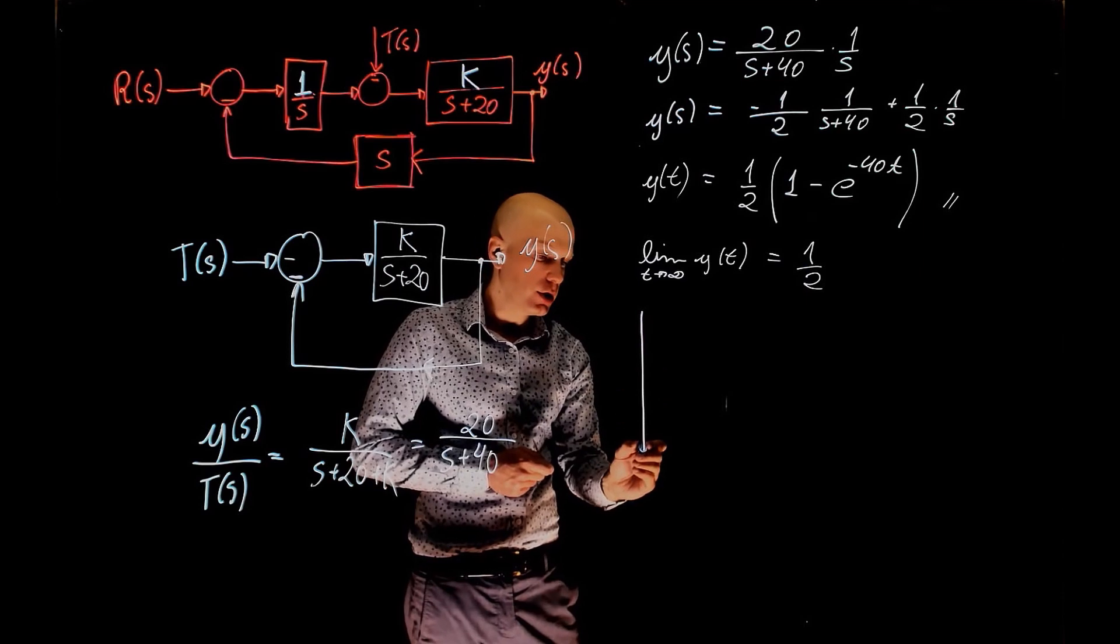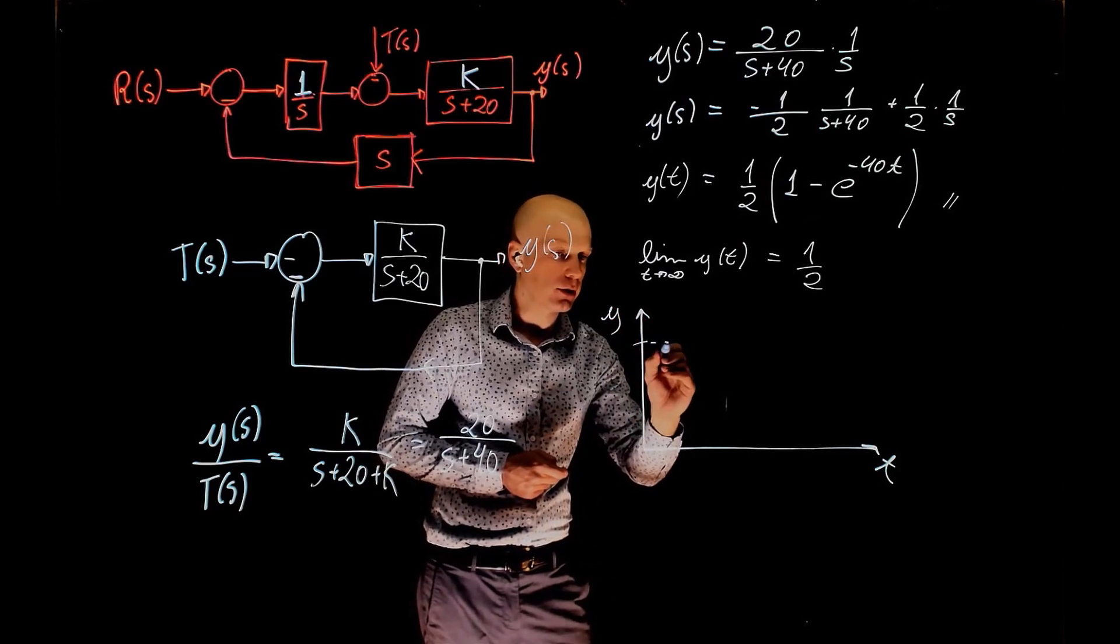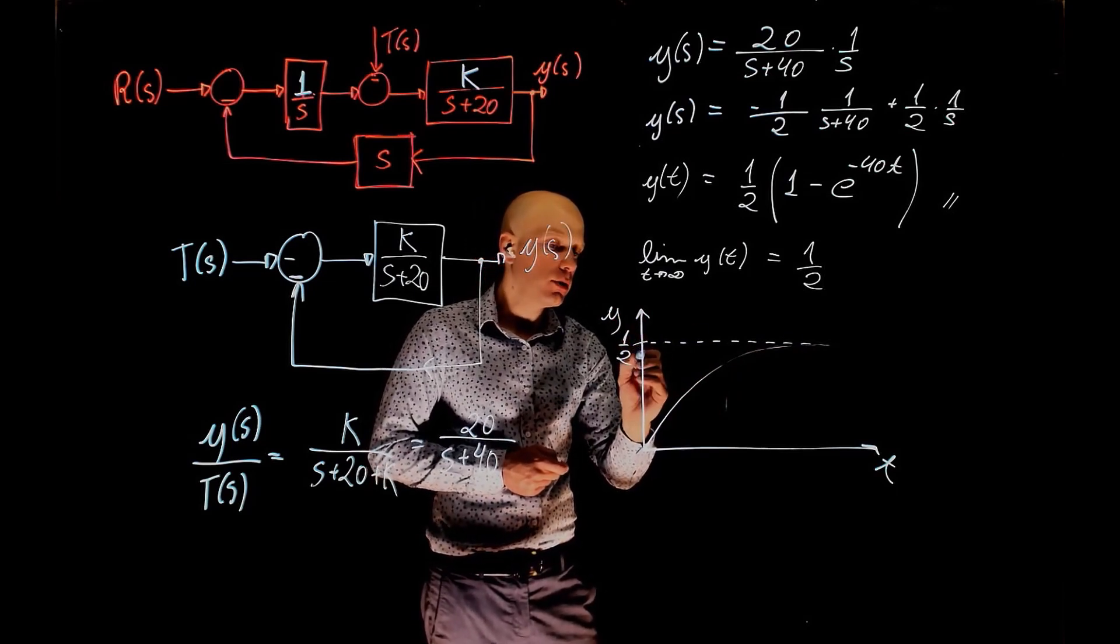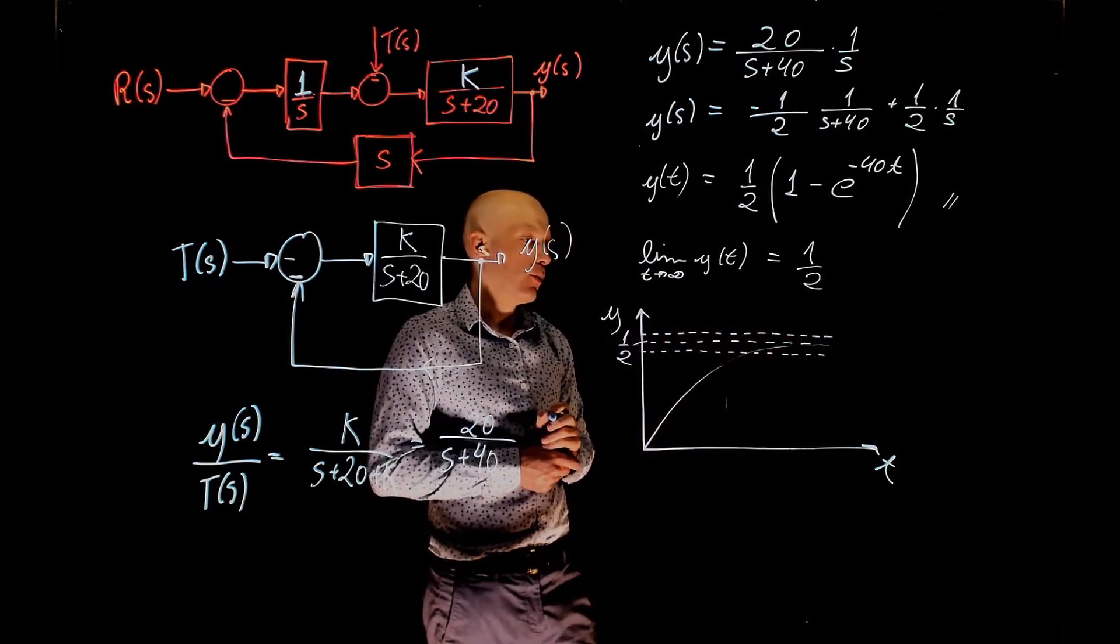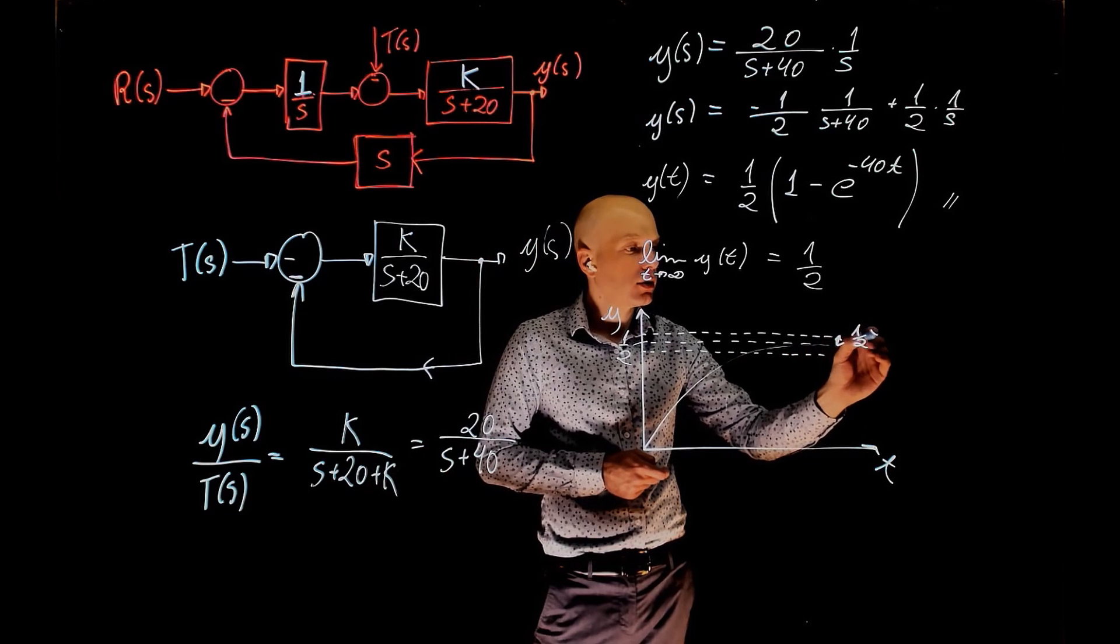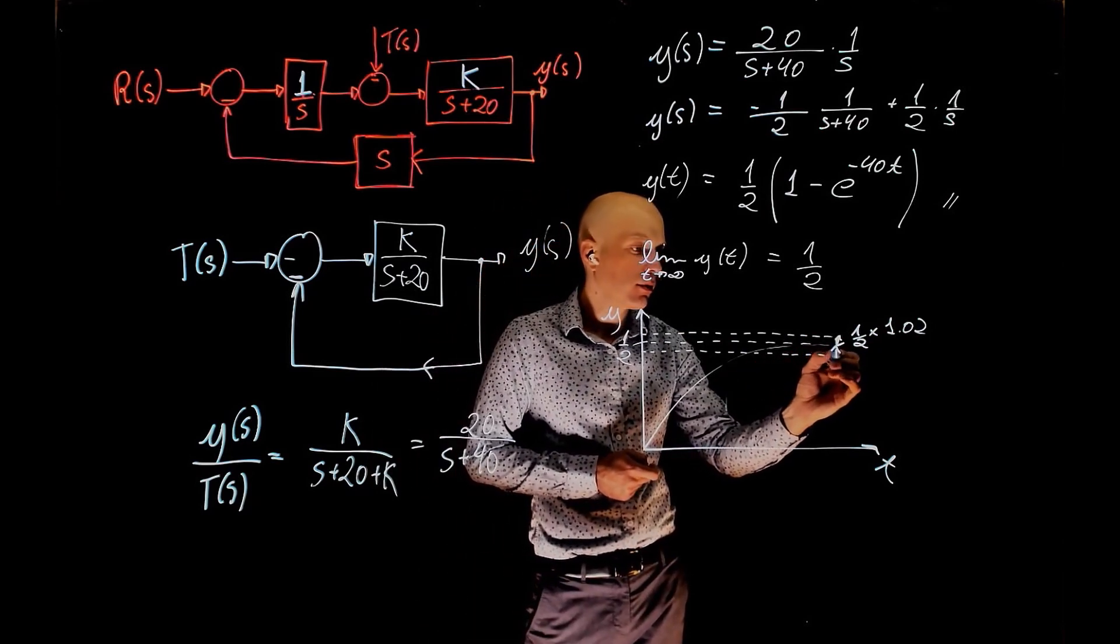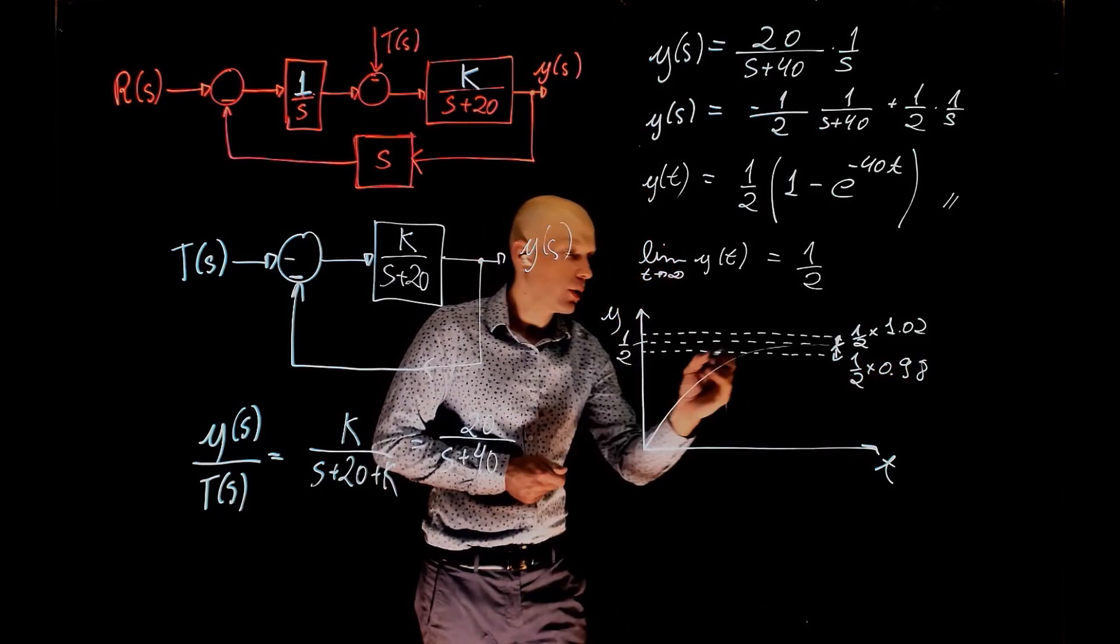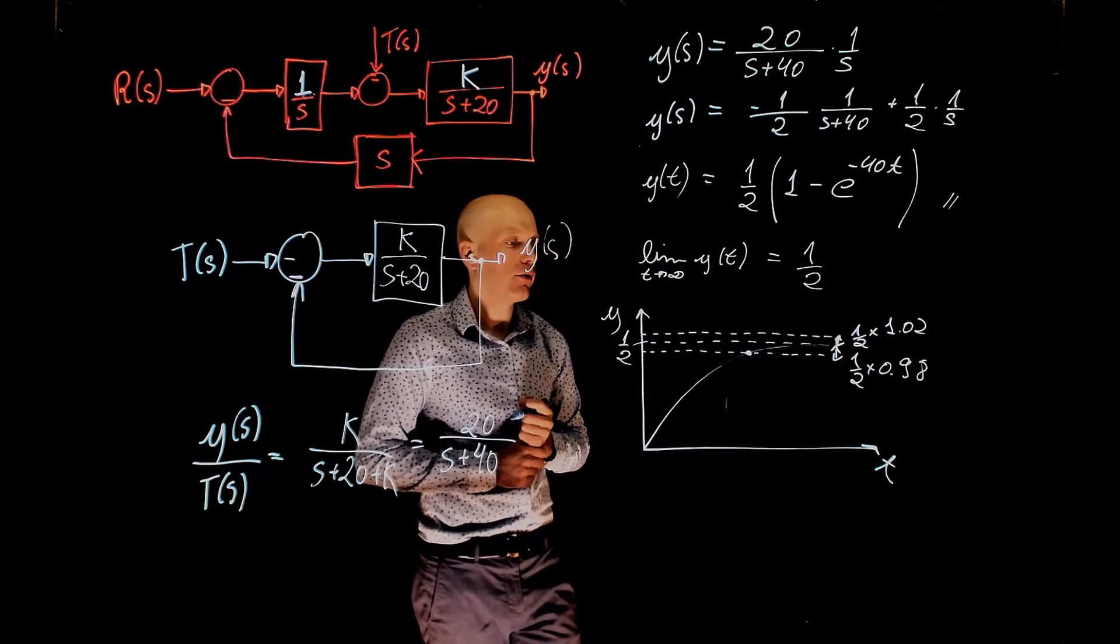And you're interested in the value of t that will bring us to within 2% of that value, which means that our function here, y as a function of t, follows an exponential curve. This is 1/2 and we want to be within a range of 2% of 1/2. So 2% above 1/2 is 1/2 times 1.02 and 2% below 1/2 is 1/2 times 0.98.